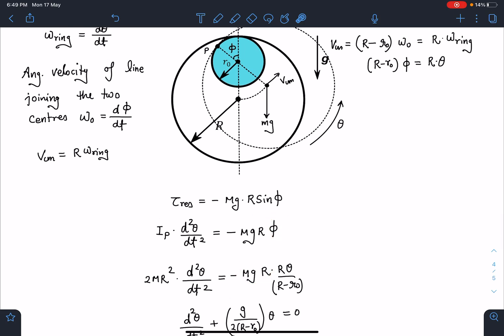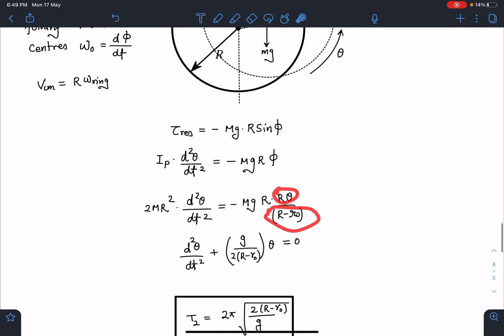So here you can see MR² is going to get cancelled. So my equation will become d²θ/dt² = -[g/2(R - R0)]θ = 0. This is the SHM equation we should be using for time period calculation.